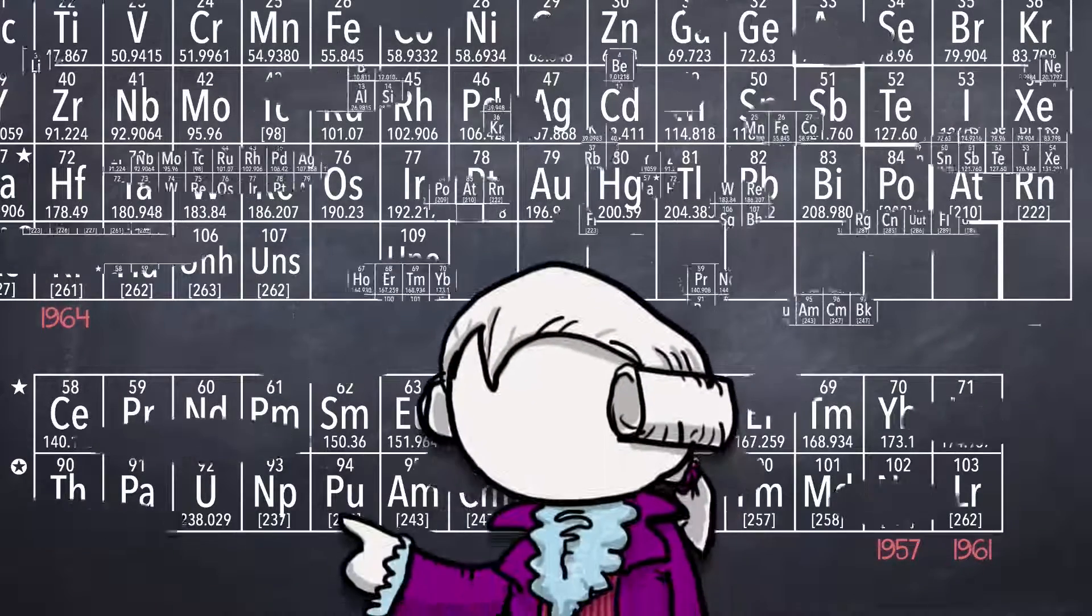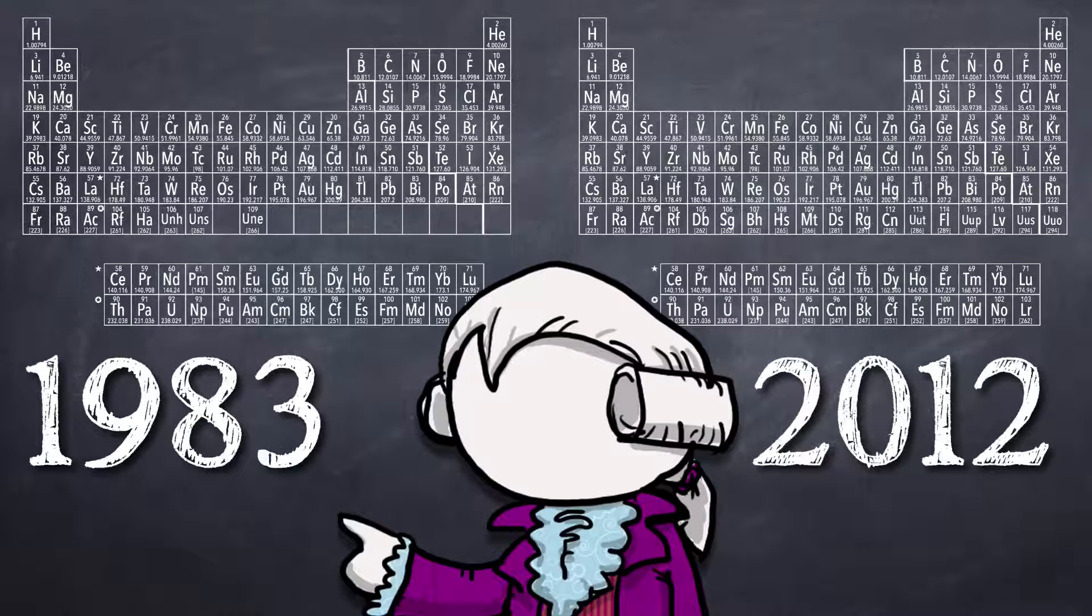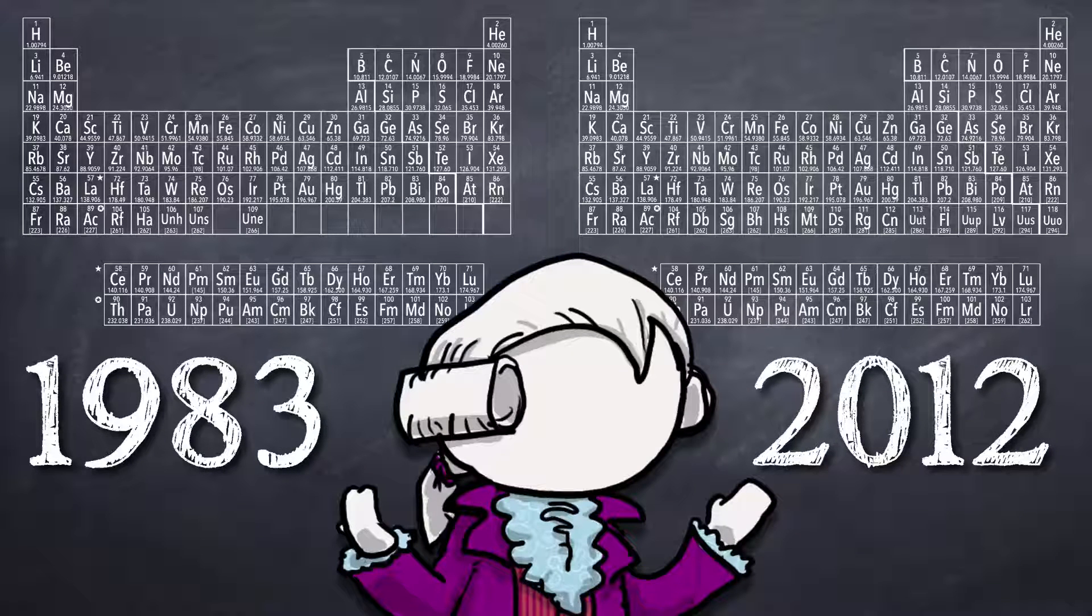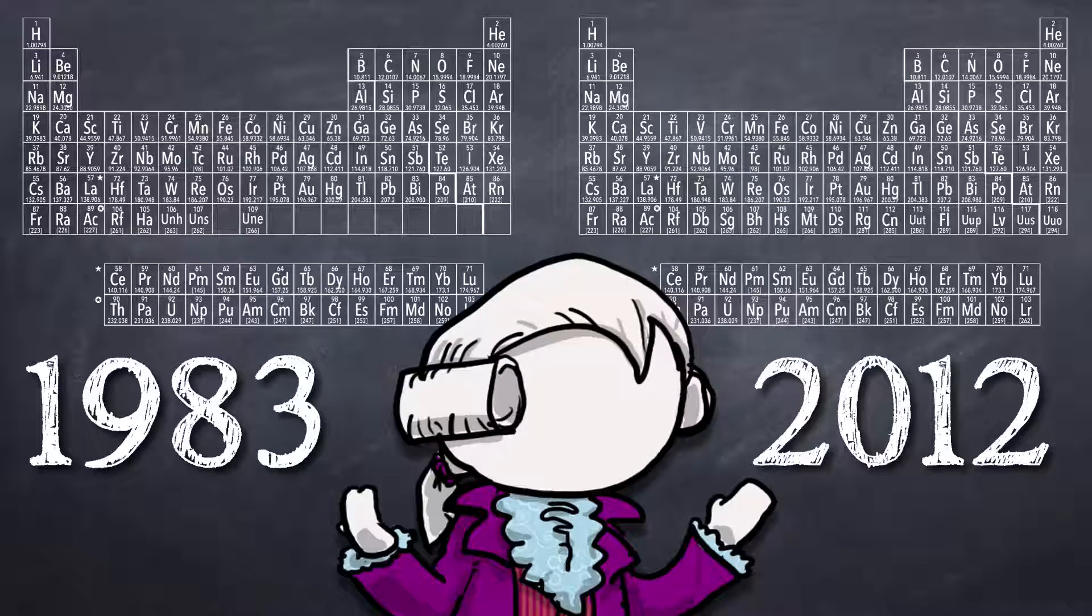So there you go. As best as I can tell, this is what a periodic table from 1983 would look like. I could not find a periodic table from 1983, but if anyone has an old textbook sitting around, let me know how close I got in the comments.